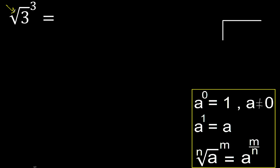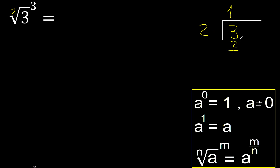Here there is no number, therefore it is 2. 3 is greater and 3 cannot be divided by 2, therefore we divide with a remainder. 3 divided by 2: 2 multiplied by which number is nearest to 3 but not greater? 2 multiplied by 2 is 4, which is greater, therefore 1. 2 multiplied by 1 is 2, which is not greater. Subtract — the remainder is 1.